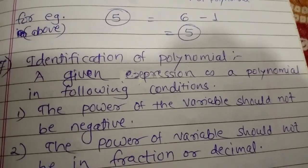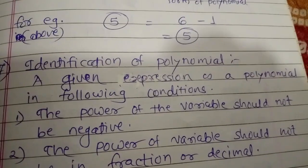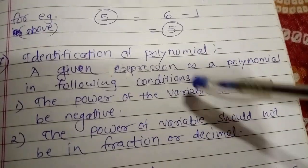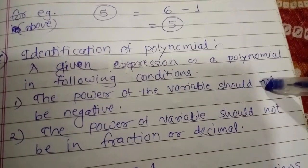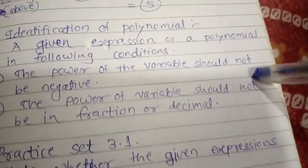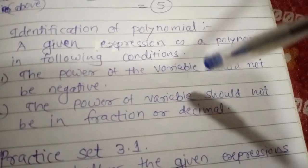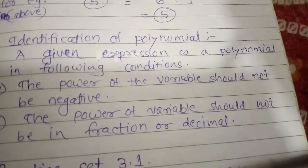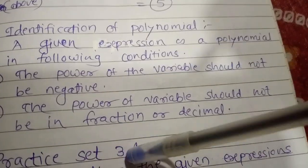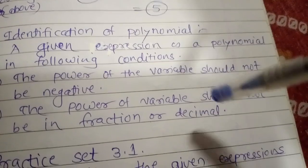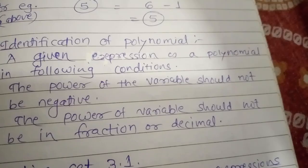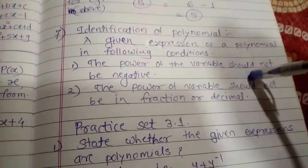After that we have to see the identification of polynomials — how to find out whether a given expression is a polynomial or not. A given expression is a polynomial under the following conditions: first, the power of the variable should not be negative; second, the power of the variable should not be in fraction or decimal form.